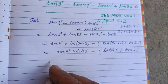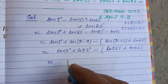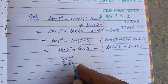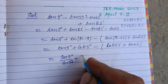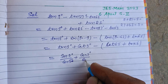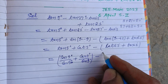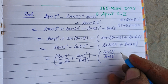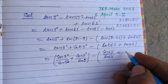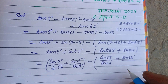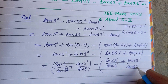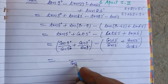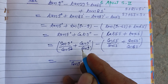We expand using tanθ = sinθ/cosθ and cotθ = cosθ/sinθ. So we have sin9°/cos9° plus cos9°/sin9°, minus cos63°/sin63° plus sin63°/cos63°. Taking LCM for the first pair gives sin²9° plus cos²9°, all over sin9°cos9°.